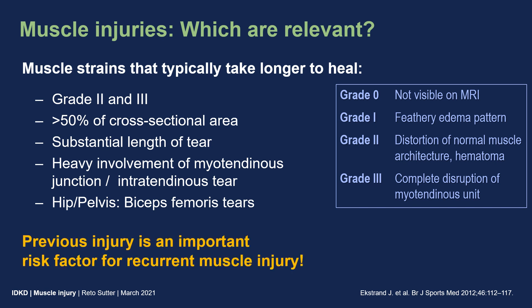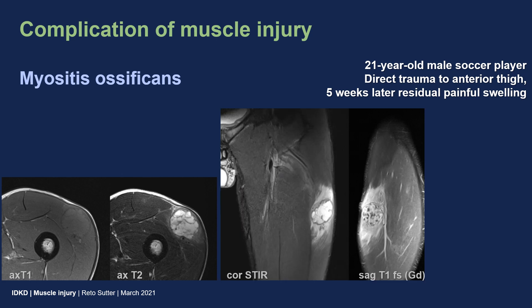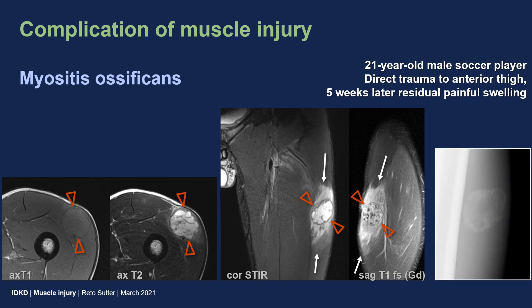Previous injury is an important risk factor for recurrent muscle injury and occurs in up to 15% of injuries. This is a classic complication after blunt trauma: we see a lobulated mass in the vastus lateralis muscle in a soccer player five weeks after trauma. This is not a soft tissue sarcoma and does not need to be biopsied. This is myositis ossificans — a delayed ossification of an intramuscular hematoma with characteristic extensive perilesional edema. The diagnosis was confirmed by the characteristic appearance with peripheral ossification on x-rays.